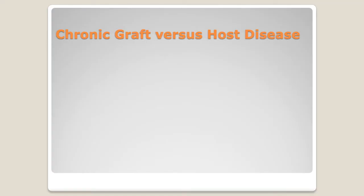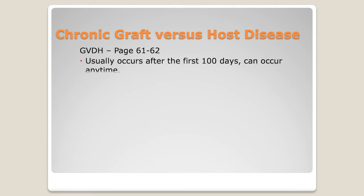Now let's talk about chronic graft versus host disease, covered on pages 61 and 62 of your binder. This is thought to usually occur after the first 100 days, though we're learning it can present a little earlier. It's chronic because it lasts longer. Think of acute like a flare-up — something that pops up, we treat it, it goes away. Chronic has more long-lasting effects and is more of a nuisance for longer, so we have to try to keep a tighter lid on it.